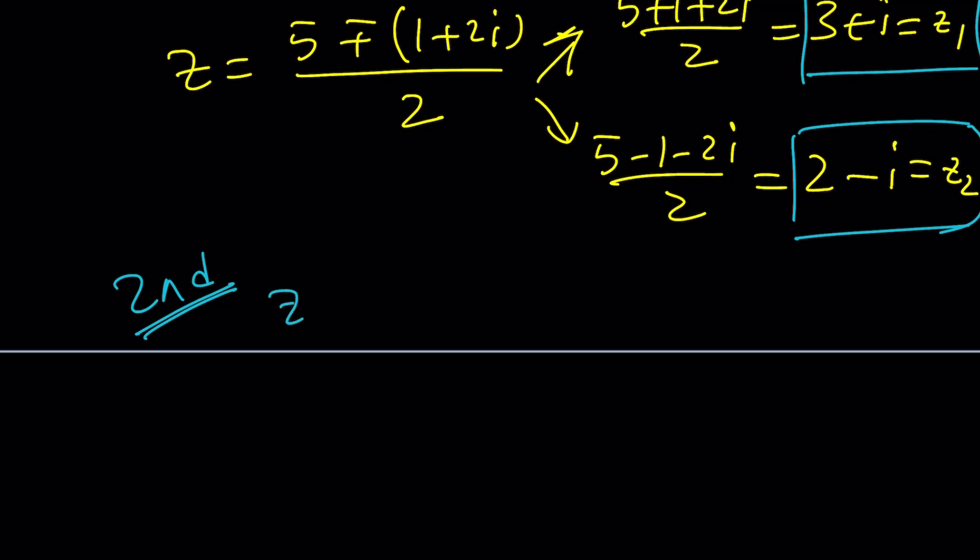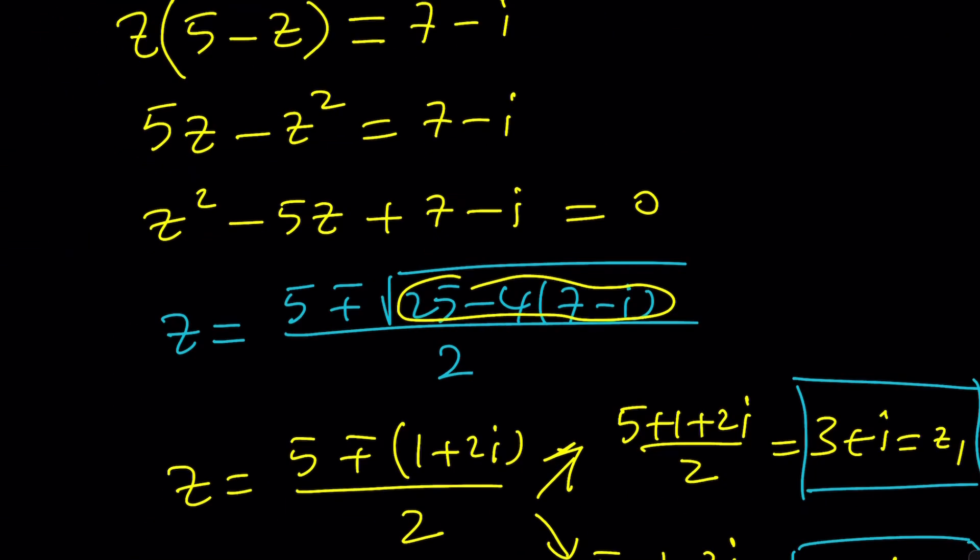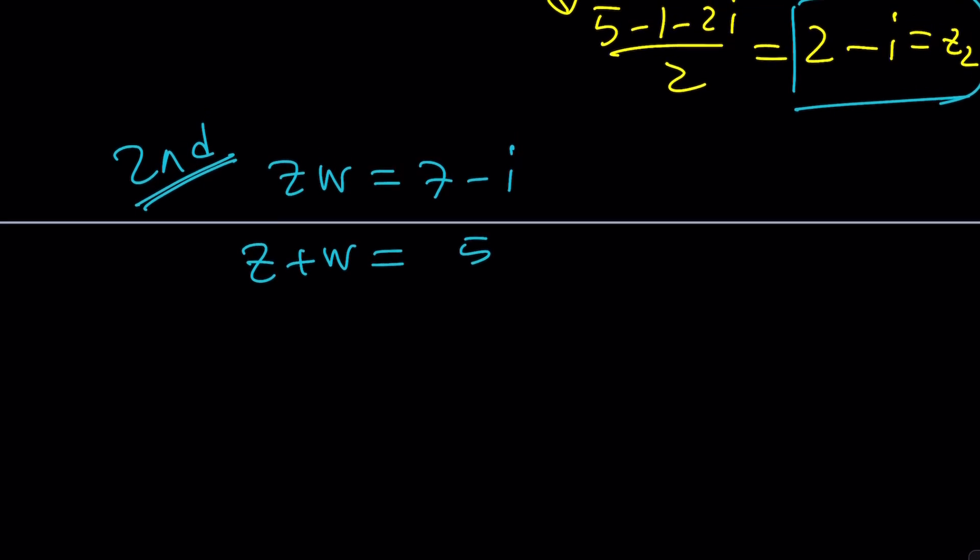So, one more time, let's write the system. ZW equals 7 minus I. Z plus W equals 5. Awesome. Now, what could be a different way to approach this problem? The first method used what? What did you use? Substitution. Okay. So, we've got to do something different.